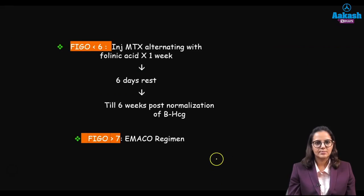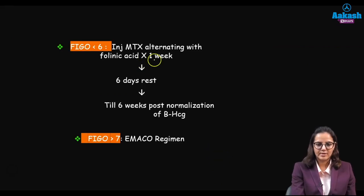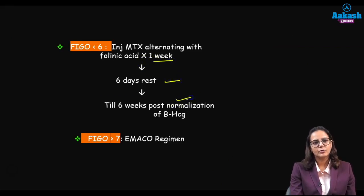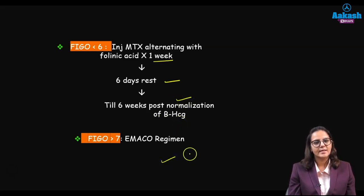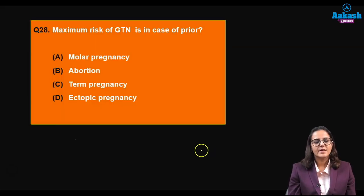If the FIGO classification score is less than 6, give injection methotrexate alternating with folinic acid for one week, followed by a one-week rest, continued until six weeks post-normalization of beta-hCG. If the FIGO risk score is more than 7, put the patient on the EMA-CO regimen.